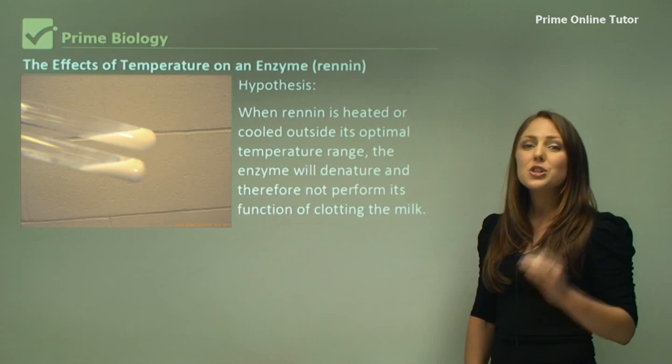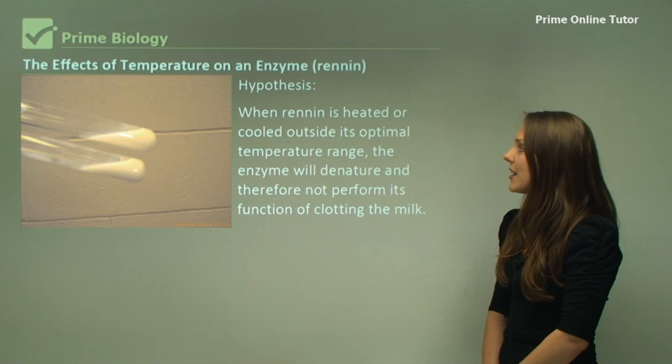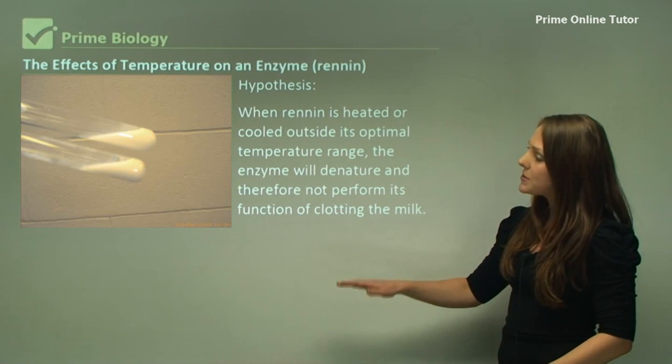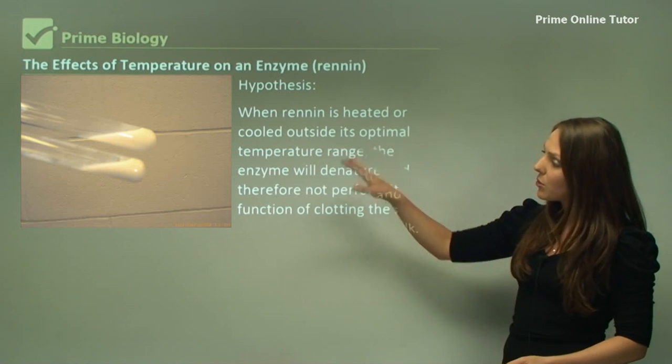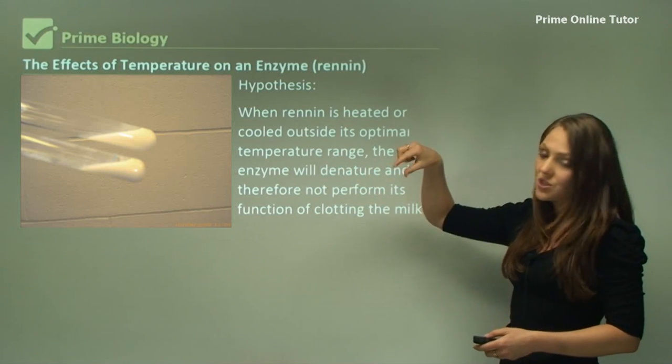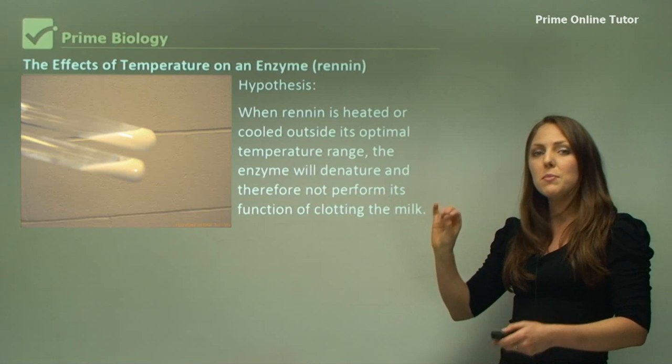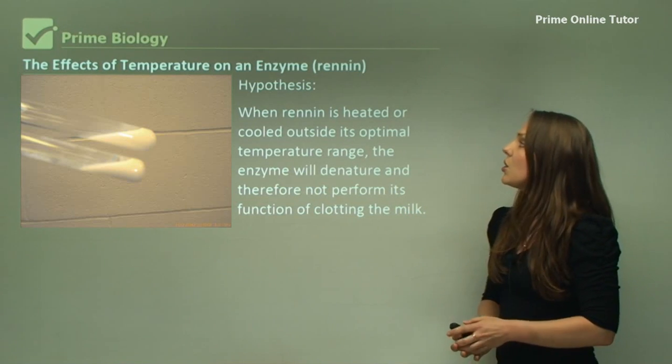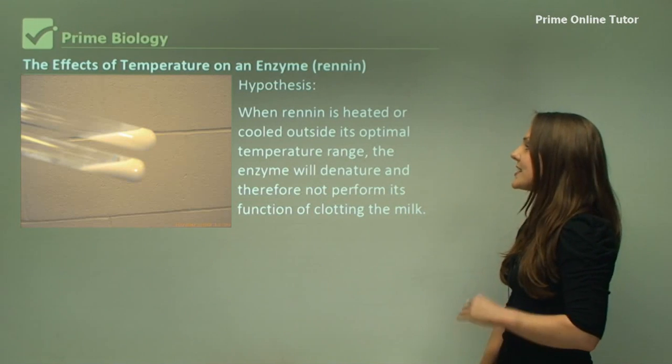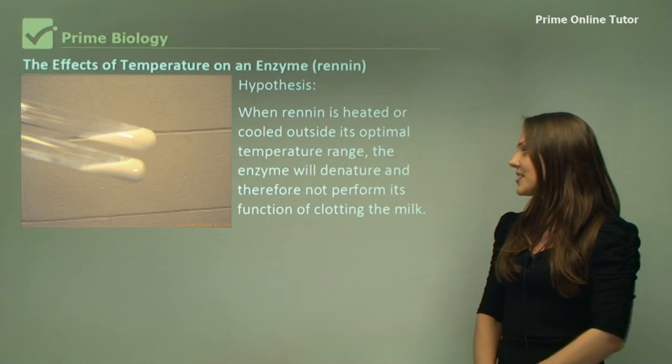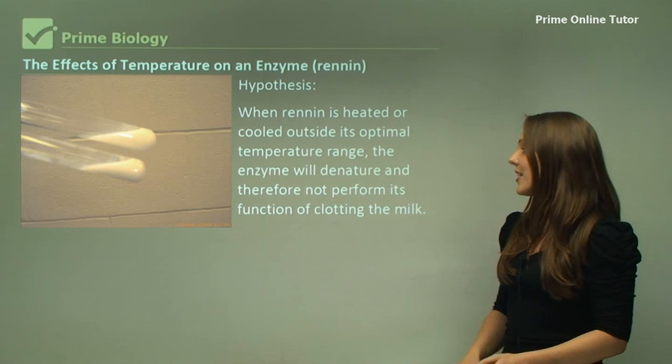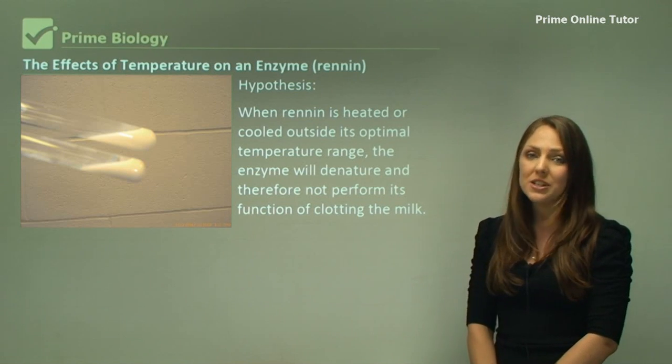The hypothesis: This is your experiment that you're looking at. We have got here two test tubes filled with milk, three mils of milk, and you can see that the milk is liquid. The hypothesis is when rennin is heated or cooled outside its optimum temperature range, the enzyme will denature and therefore not perform its function of clotting the milk.